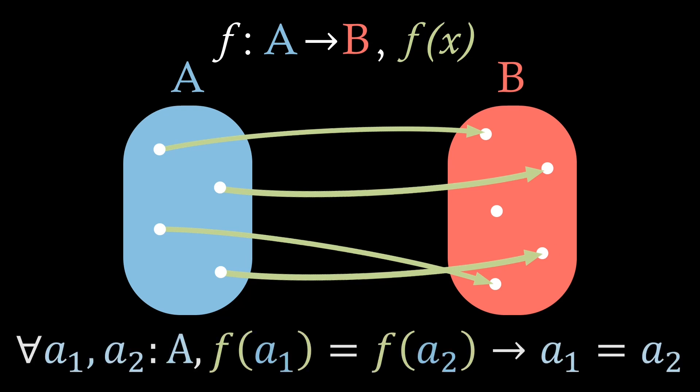which can be written as: for all a1 and a2 in group A, f of a1 equals f of a2 implies that a1 equals a2. This is a definition of what it means to be injective. So this here is an injective function.